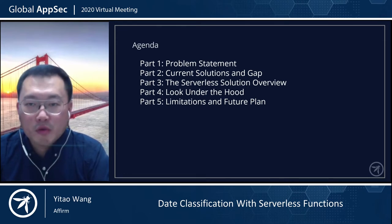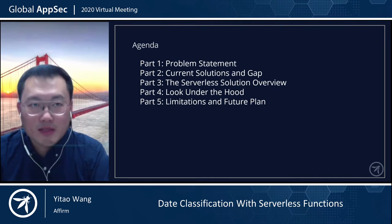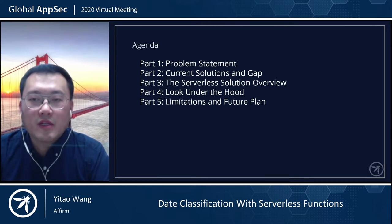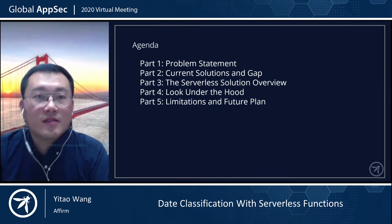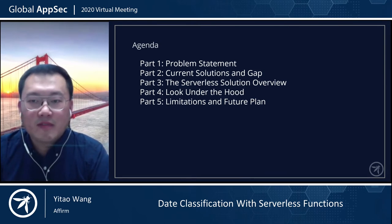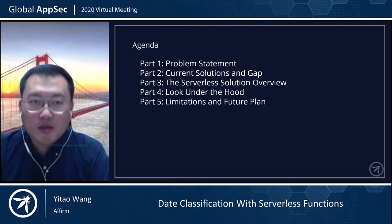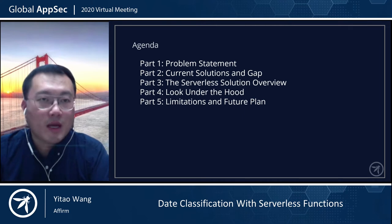In part two, I will cover how companies solve these data classification problems today, and what I think the gaps are. In part three, I will briefly touch on the serverless computing concepts and some other services offered by Amazon Cloud Services. Please keep in mind that this solution is not AWS specific. The same concept could apply to other cloud service providers as well. I use AWS primarily because I'm pretty familiar with it, and I have the demo set up on it as well.